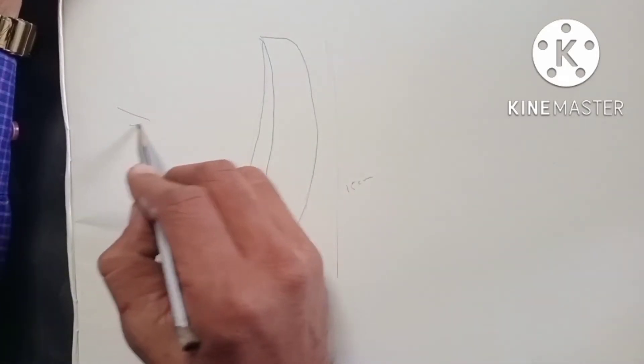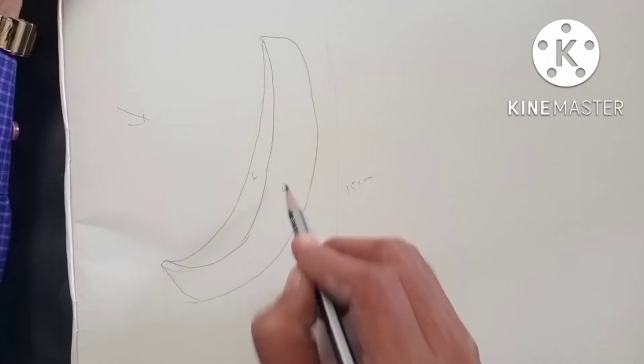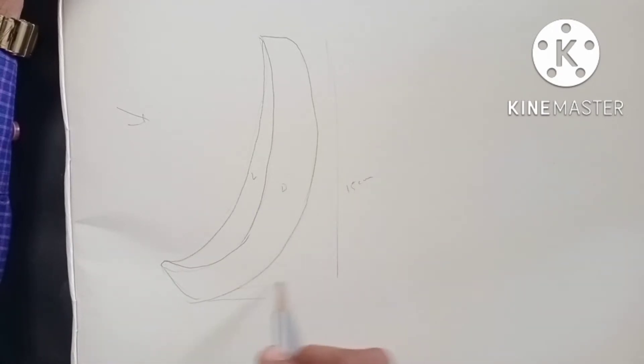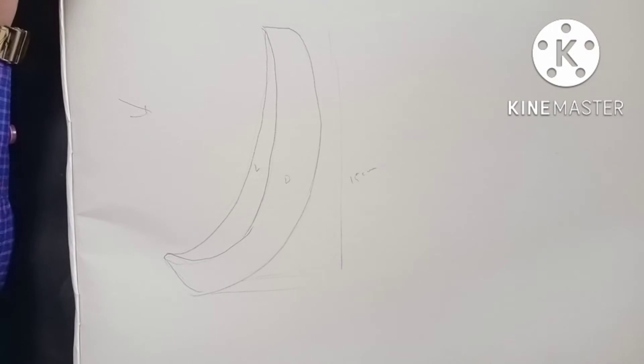Now for example sunlight is from this side, this is light tone, this is a dark tone. We will show the shadow. Now we will see how to color.